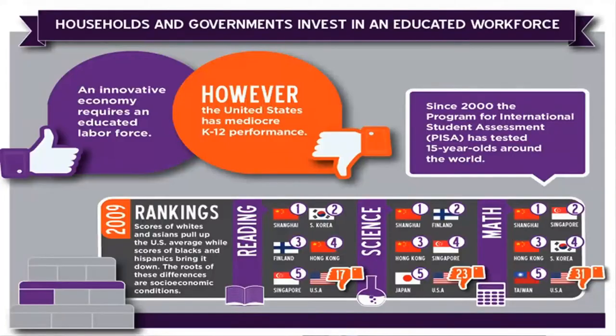In the United States, people come from around the world to attend the system of higher education. But in fact, the primary and secondary education system is mediocre on average — a result of differences in race and ethnicity in terms of performance that are rooted in socioeconomic conditions.